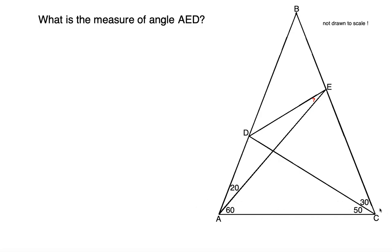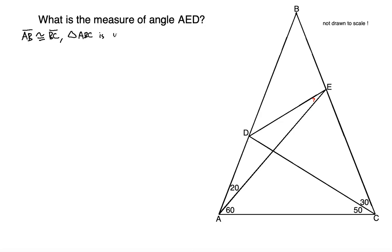They're equal in measure, so the base angles are equal. That tells you that triangle ABC is isosceles, namely AB and BC are equal in length. So we know that AB is congruent to BC, so triangle ABC is isosceles.